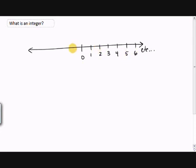These are all integers, and also the negatives: -1, -2, -3, -4, -5, -6, and again goes on forever in the negative direction.